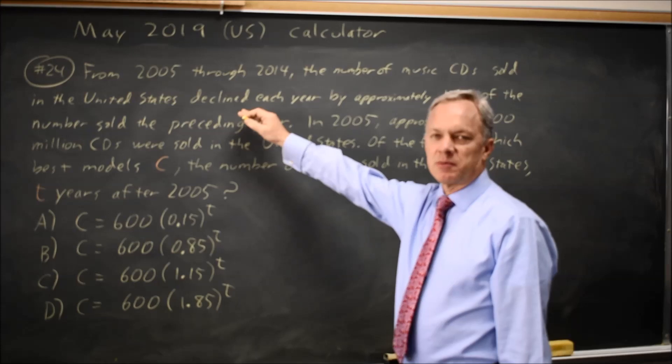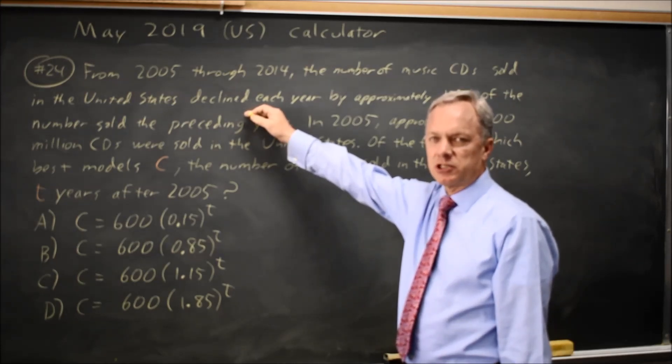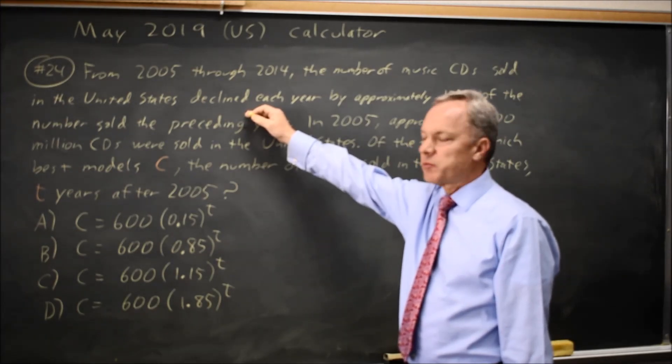When you decline by a fixed amount, that's linear. When you decline by a fixed percentage or increase by a fixed percentage or fixed multiple, that would be exponential.